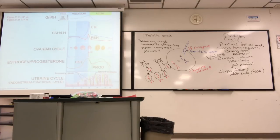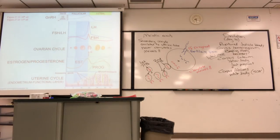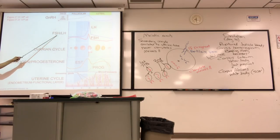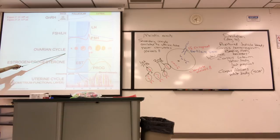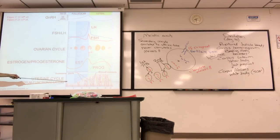Now we're going to marry the ovarian cycle with the uterine cycle. This figure is very useful. The cycle is 28 days. There's a color code: light green, light blue, darker blue — referring to menses, follicular phase, or luteal phase. Ovulation is in the middle. I'll discuss what's happening in the hypothalamus and anterior pituitary, because those hormones are crucial. In the middle, the ovary — secreting sex hormones, estrogen or progesterone — helps develop the uterus and endometrium.